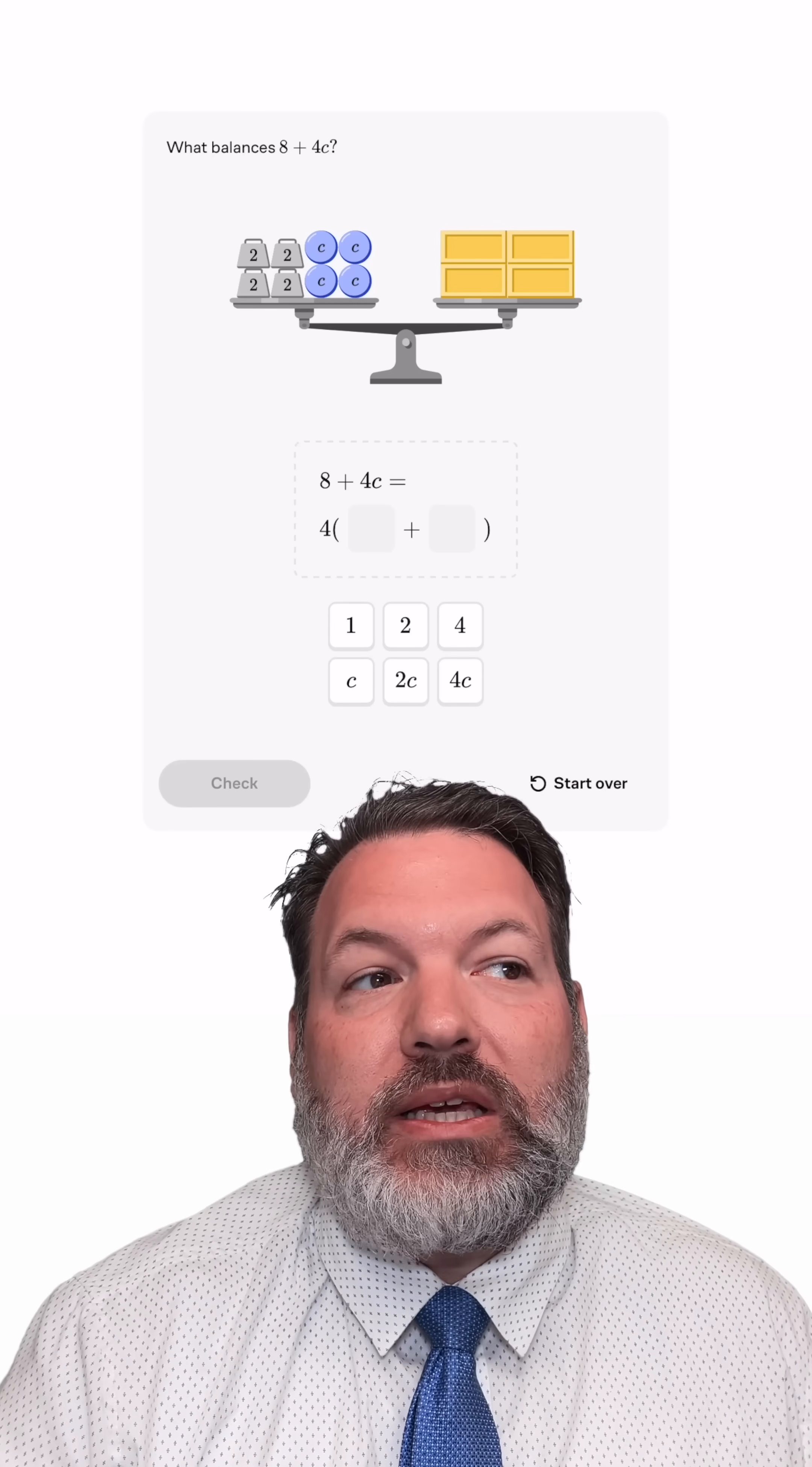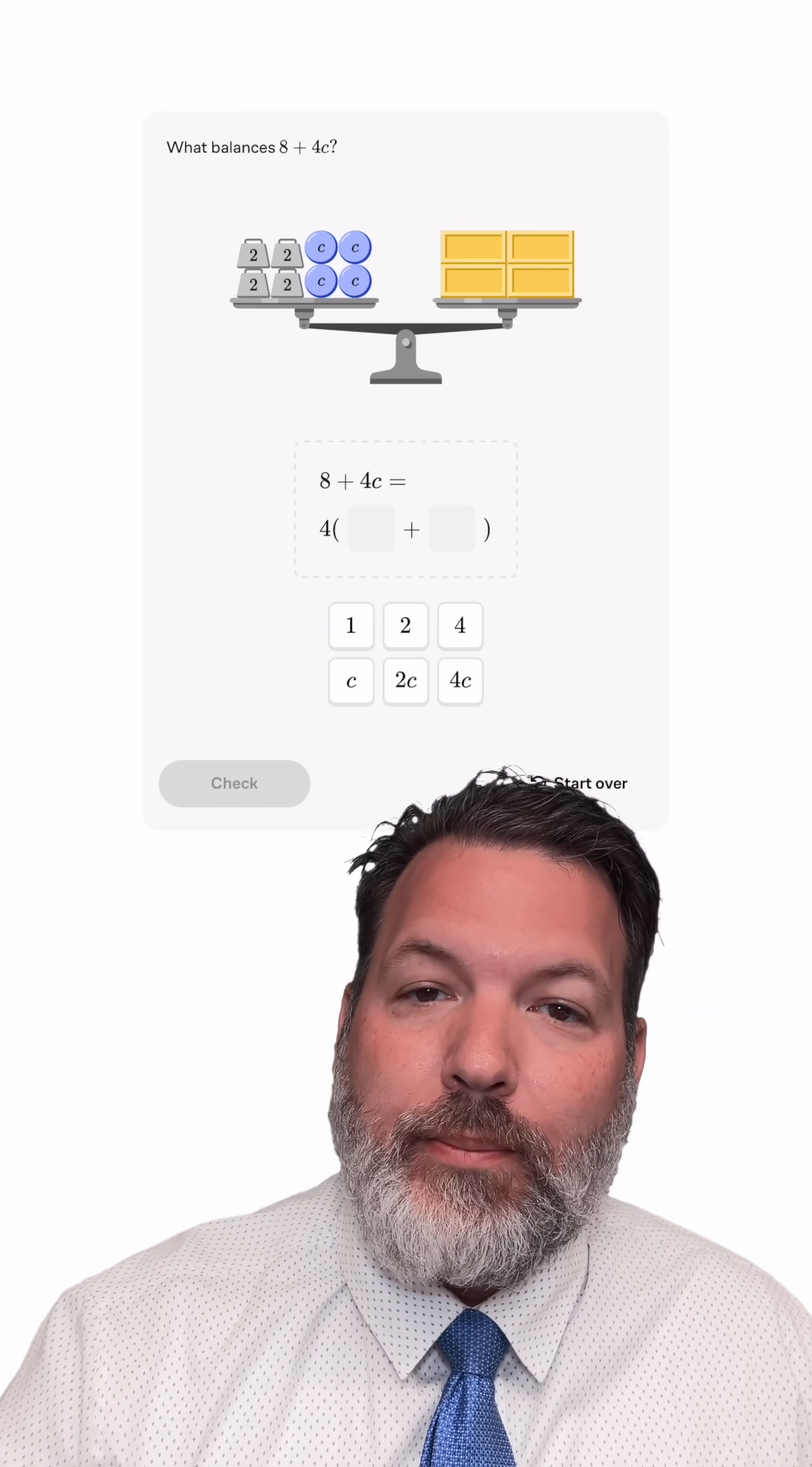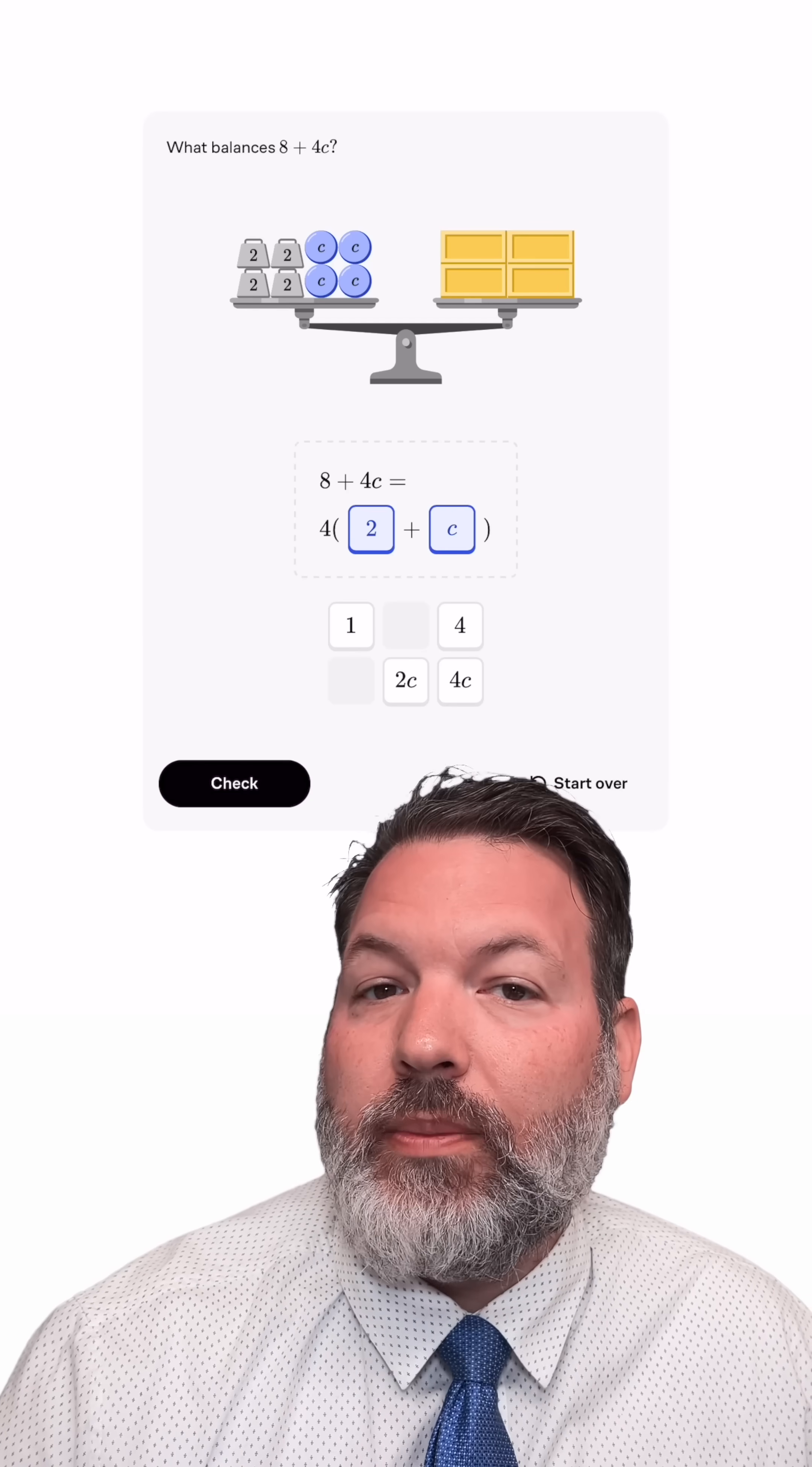What do 8 units and 4c have in common? They have in common a 4. 4 is going to be that multiplier on the outside, and we're multiplying 4 times 2 to make the 8, and 4 times c to make the 4c.